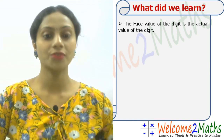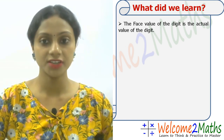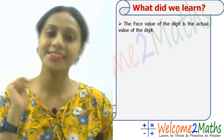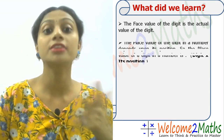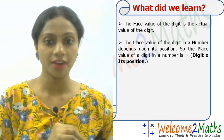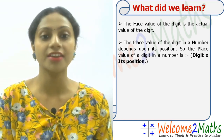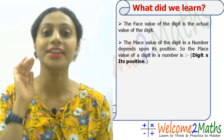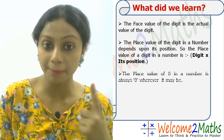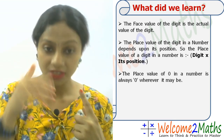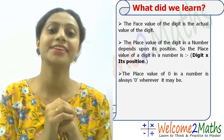Before the end of today's class, let's see once again what we learned today. The face value of a digit is the actual value of the digit, which will remain the same all the time. The place value of a digit in a number depends upon its position, and is equal to the digit multiplied by its positional value. The place value of 0 is always 0, wherever it may be.